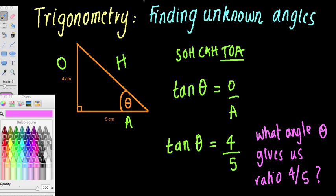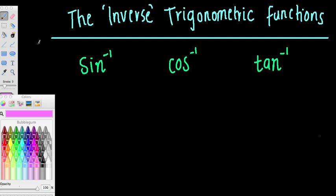We're going to use something called an inverse sine, cos, and tan function. The inverse trigonometric functions — inverse basically means we're going the opposite way. Instead of finding the ratio by typing into our calculator, we are going to go the opposite way: given a ratio, we're going to find what angle will give us that ratio. This is how we write the inverse — you can see it's sine again but to the power of negative one. When you see that, it is doing the inverse of what we've been doing before.